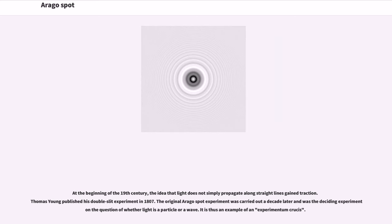At the beginning of the 19th century, the idea that light does not simply propagate along straight lines gained traction. Thomas Young published his double-slit experiment in 1807. The original Arago spot experiment was carried out a decade later and was the deciding experiment in the question of whether light is a particle or a wave. It is thus an example of an experimentum crucis.